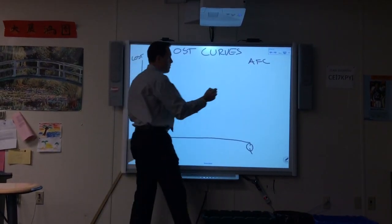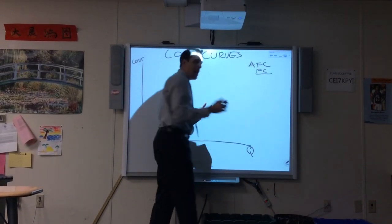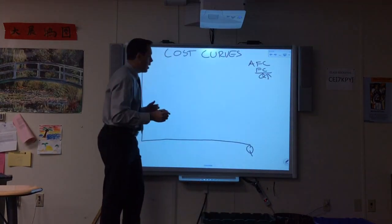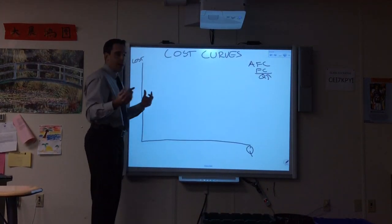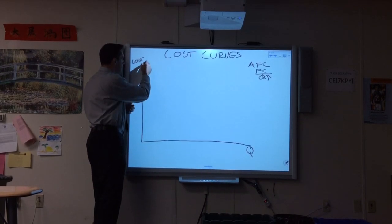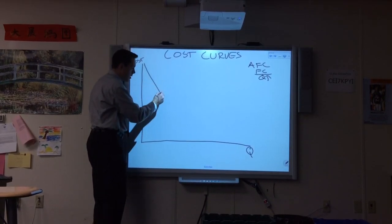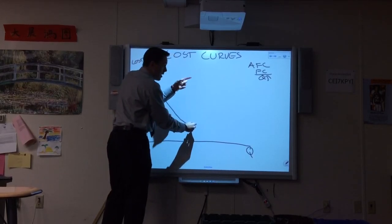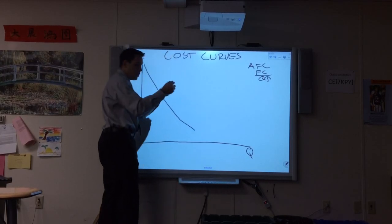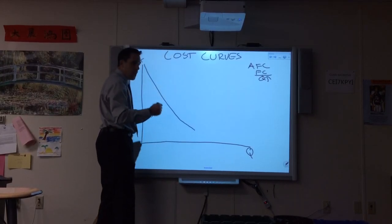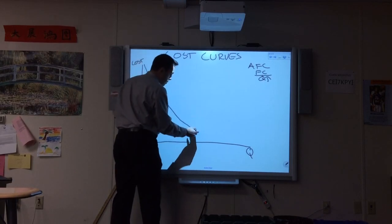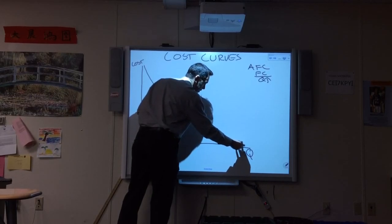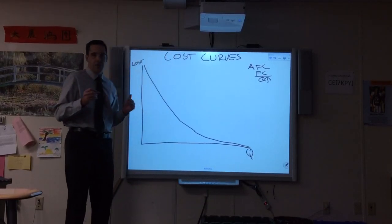Average fixed cost is where the fixed cost, which is constant, is divided by an increase in quantity. So our fixed cost, whatever it is, when we have a low quantity is going to be high, but it's going to quickly start descending because we're increasing our quantity. Since fixed cost is never changing, it's diminishing with each increase in quantity, the average, but by a smaller amount. The average fixed cost is going to get very close to zero, but it will never, ever touch zero.